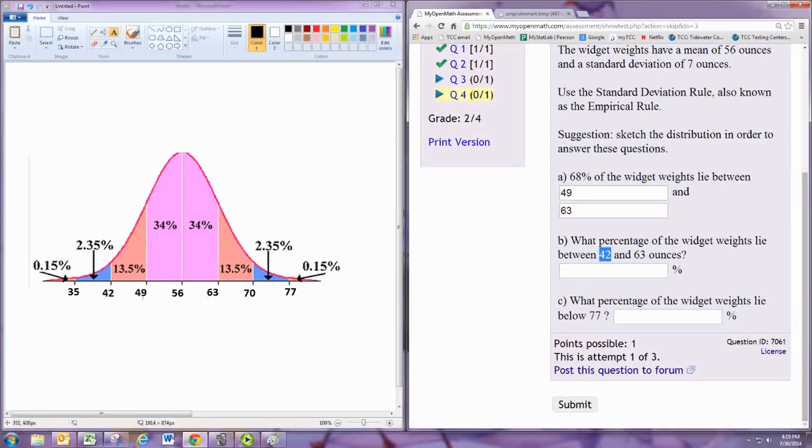So we know 49 to 63 is 68 percent. If you go to 42, you'll add on that extra 13 and a half percent. So take the 68 percent and add on 13 and a half percent and you get...